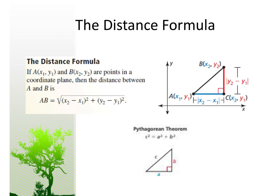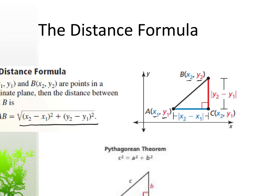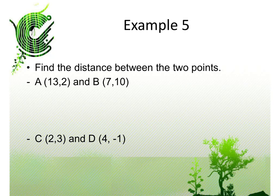The distance formula is AB = √((x₂ − x₁)² + (y₂ − y₁)²). It comes from the Pythagorean theorem, a² + b² = c². We find the distance between the x-coordinates, square it, find the distance between the y-coordinates, and square it.